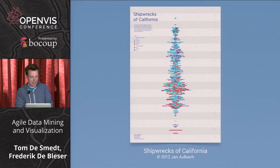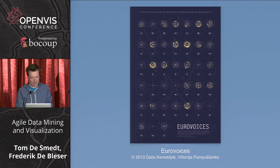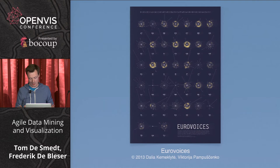Here are some examples of work that students have created. This is a visualization of shipwrecks off California over a 50-year period — they're colored by the category or the way they crashed. Some vanished, which is interesting. This next one is really fun — it was made by two students from Lithuania and focuses on the Eurovision Song Contest.